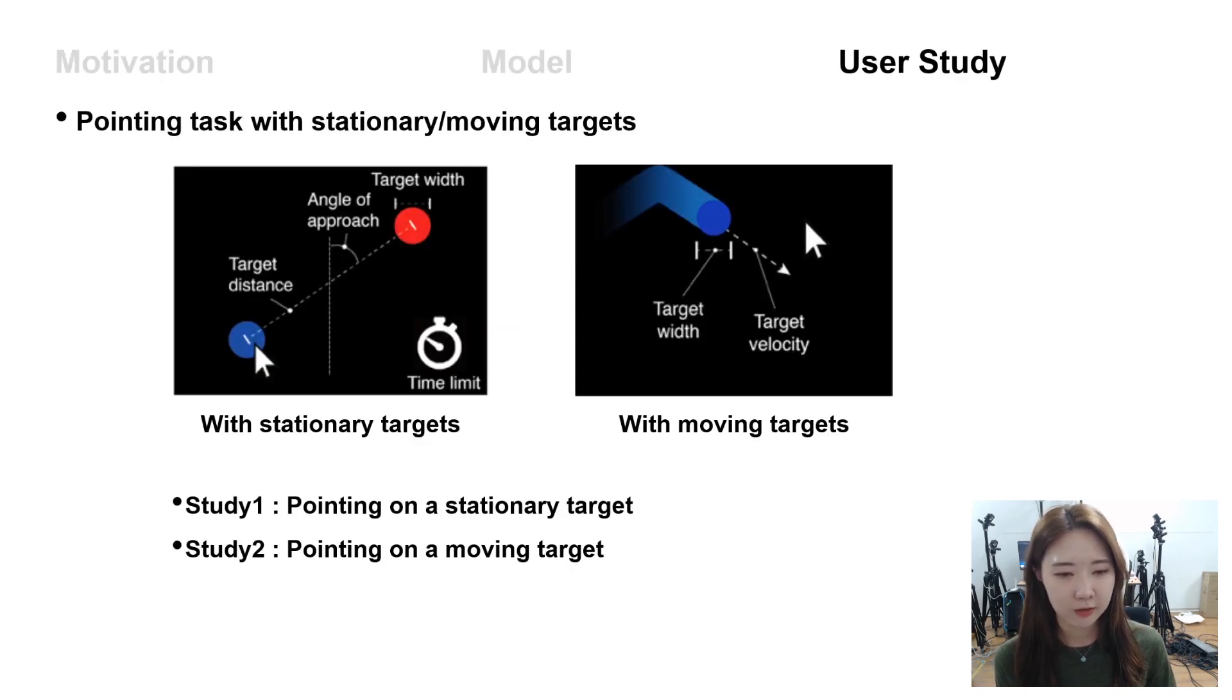We verified our model from two user studies, and two types of targets were used in our experiment. The first one is stationary target, and the second one is moving target.